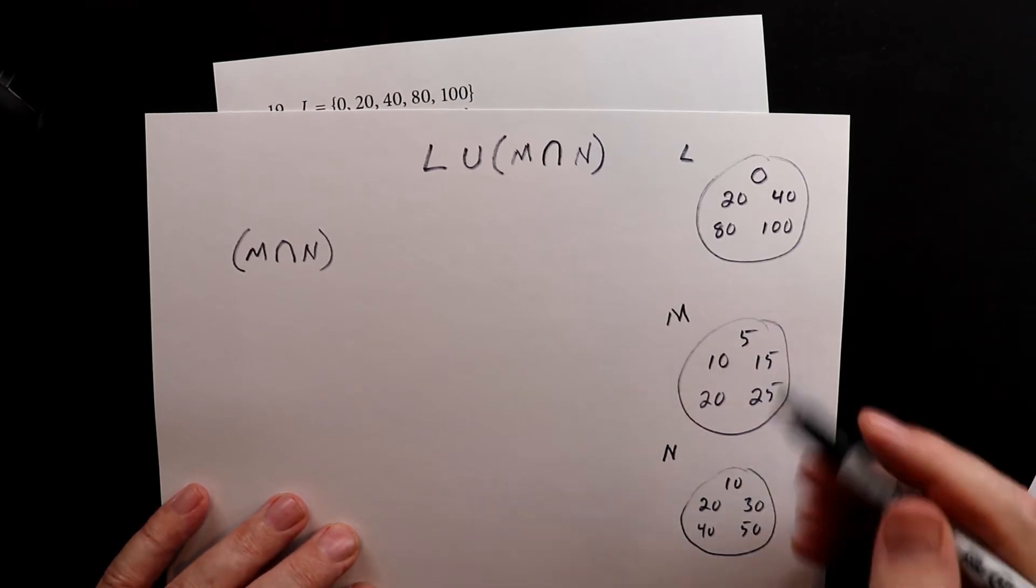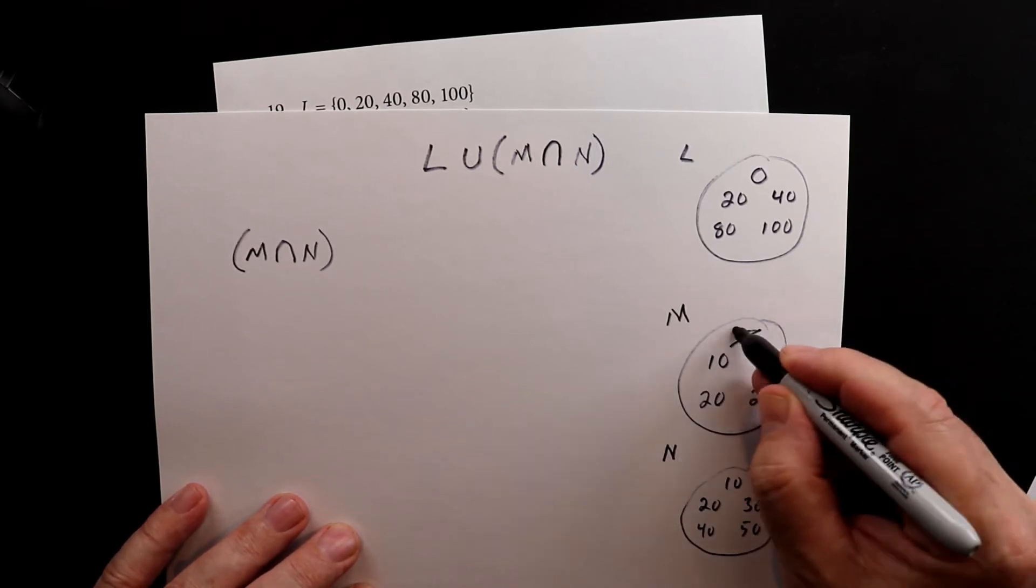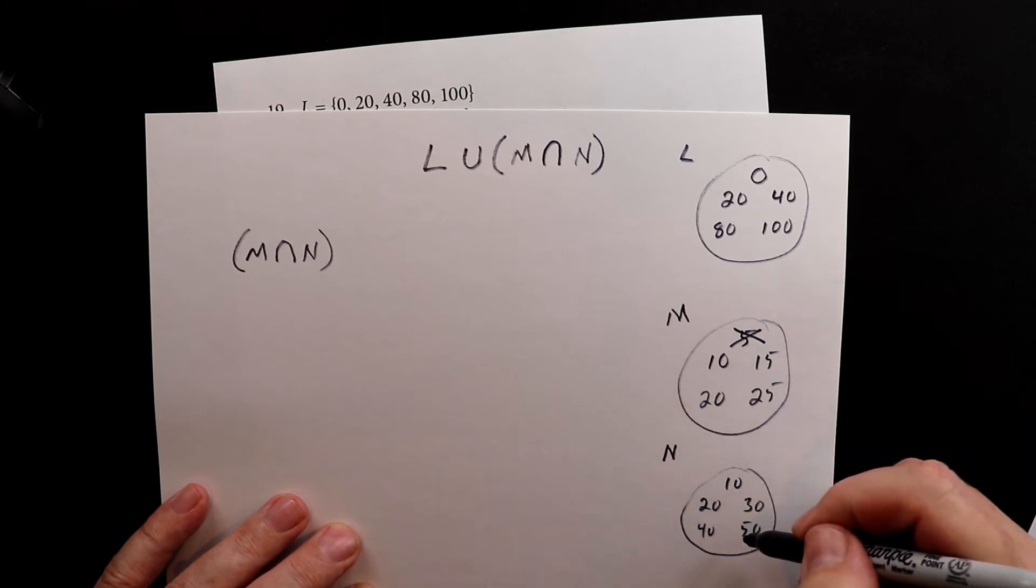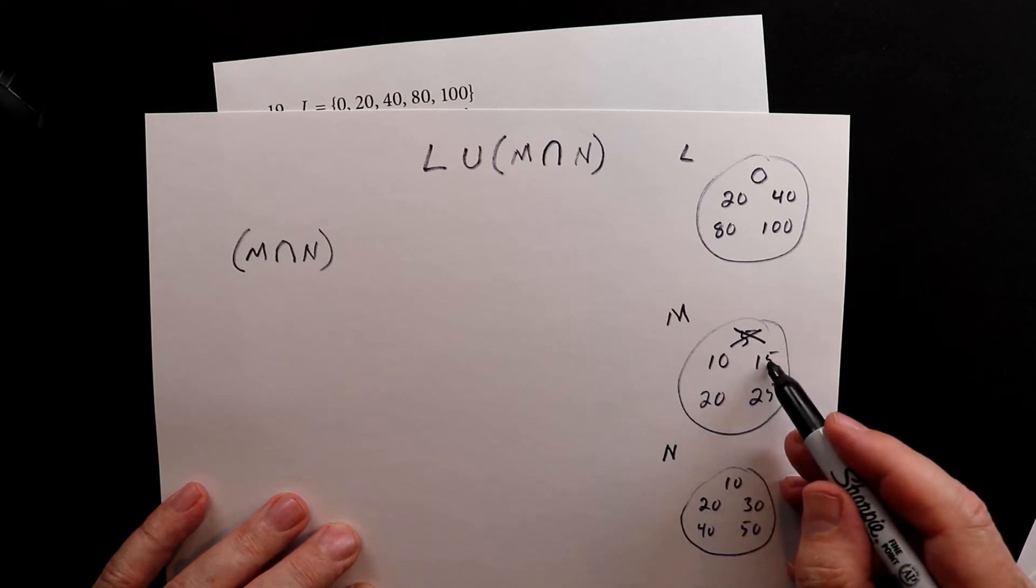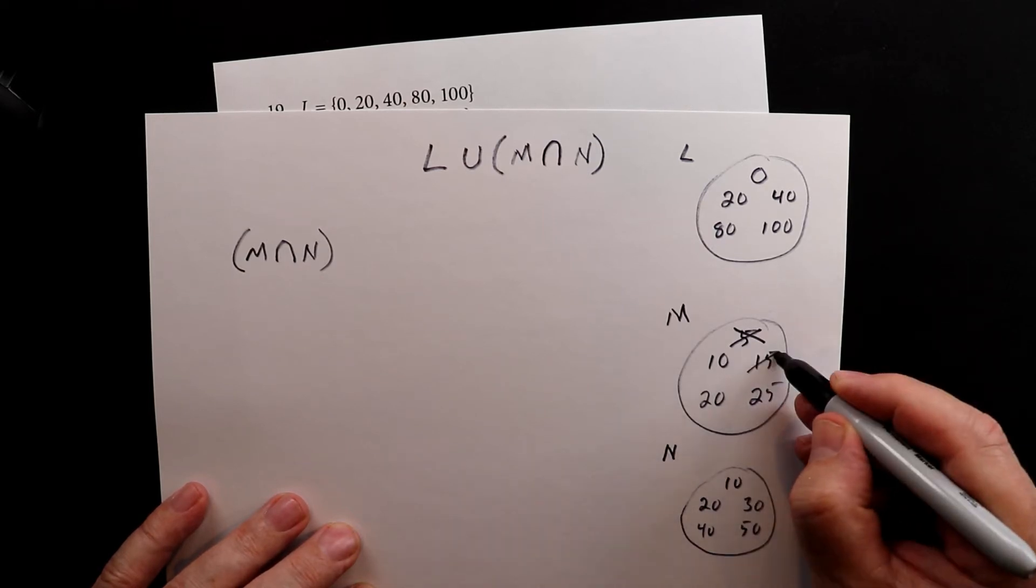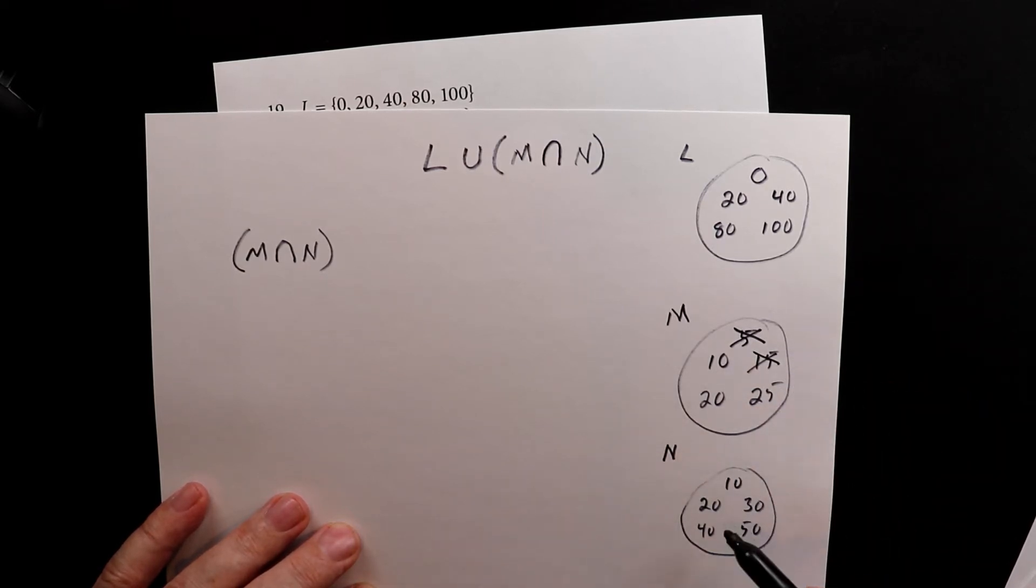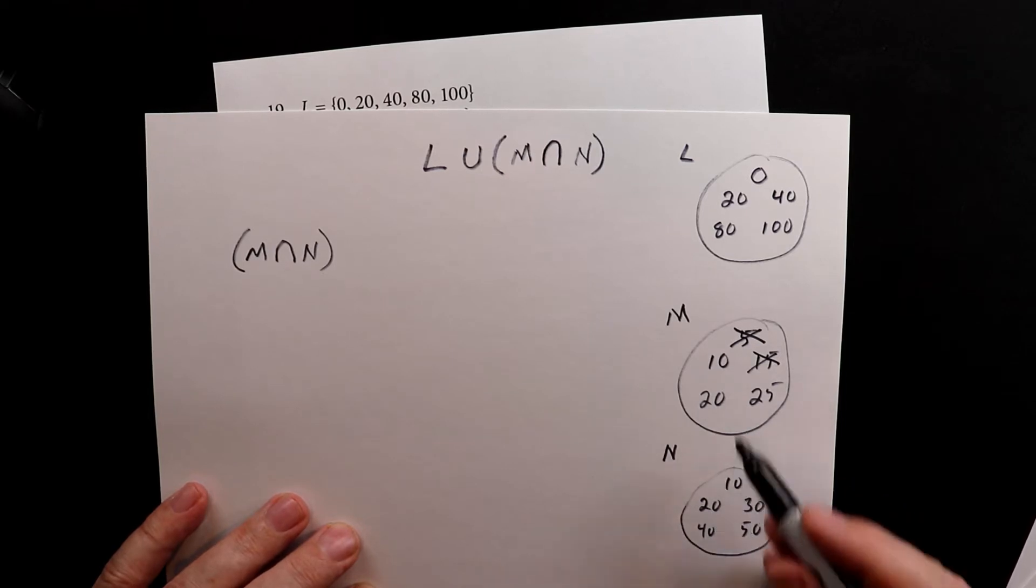So I see a 5 here, but I don't see a 5 here. So that goes away. There's no 5 down here, so we don't worry about it. I do see a 10 in both. So that stays. There's no 15 on the bottom, so the 15 goes away. Now there is a 20, so that stays.